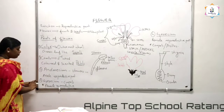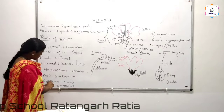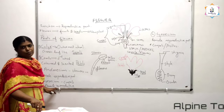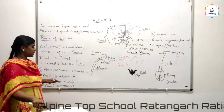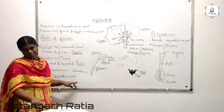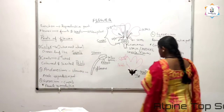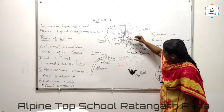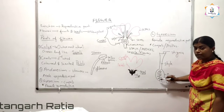The fourth whorl, the innermost whorl of the flower, is gynoecium. Gynoecium is the female reproductive part of the flower, and it is made with carpels — otherwise we can call them pistils. See inside this flower itself you can see a single pistil. I have drawn a picture of a single pistil here.